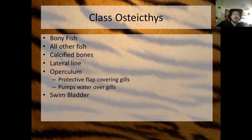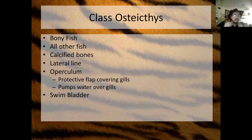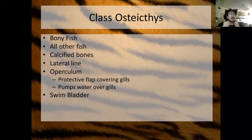Osteichthyes also have a swim bladder — a hollow organ that's inflatable in fish. Fish pull oxygen out of the water to breathe, pulling oxygen into the blood. The blood can take gases from the water — oxygen, carbon dioxide, and nitrogen — and fill up the swim bladder.